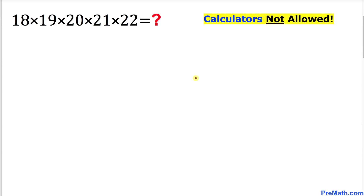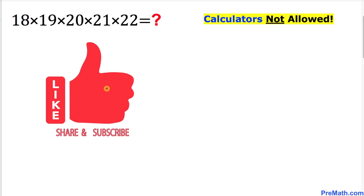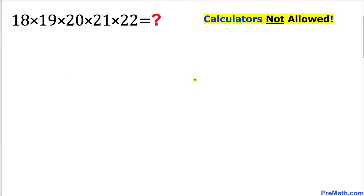Welcome to pre-math. In this video tutorial we are going to multiply these given numbers: 18 times 19 times 20 times 21 times 22, and we are not supposed to be using calculators of any kind. Please don't forget to give a thumbs up to this video. So let's go ahead and get started with the solution.